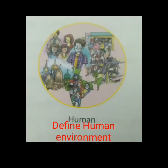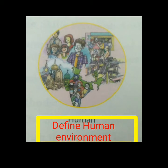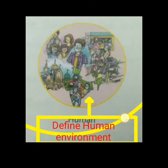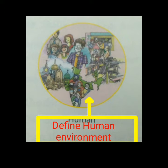Today's topic is human environment. Human beings form the most important part of the environment. They not only interact within the environment but also modify it according to their needs. Early man lived in the natural environment and adapted himself to the nature around him. But man today is different — his needs have grown, and in order to meet them, man has modified the environment around him.